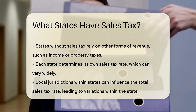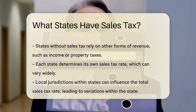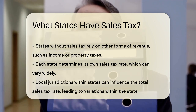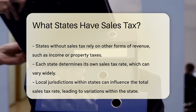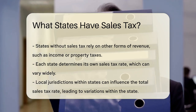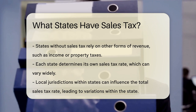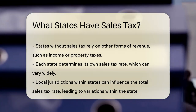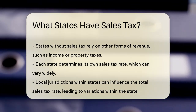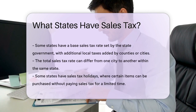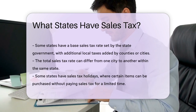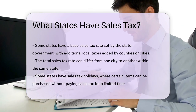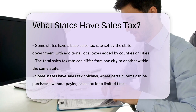In states with sales tax, the rate can be influenced by local jurisdictions, resulting in varying totals within the state. A few states have a base sales tax rate set by the state government, with additional local taxes that can be added by counties or cities. This means that the total sales tax rate can differ from one city to another within the same state.